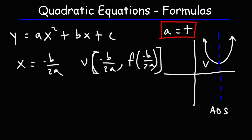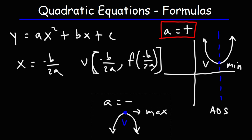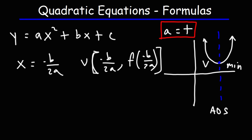Because the graph opens upward, the vertex represents the minimum of the function. If the graph were to open downward — that is, if a is negative — the vertex will represent the maximum. So if a is negative, it would look something like this, with the vertex at the top corresponding to a maximum on the graph.